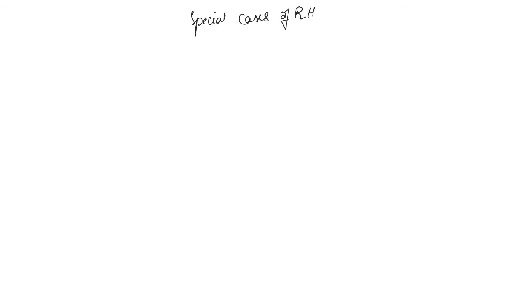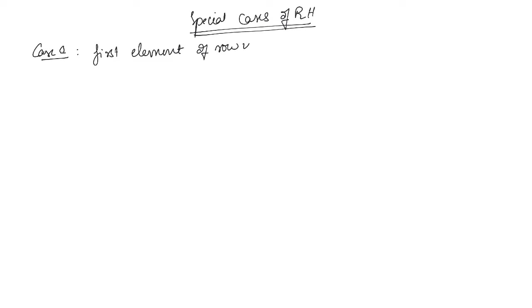Here we will discuss special cases of the RH criterion. A special case arises when an element in the first column is zero. There are two cases: Case 1 is when only the first element of a row is zero, and Case 2 is when all the elements of a row become zero. We will first discuss Case 1 by means of an example.